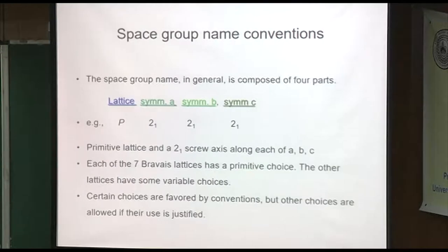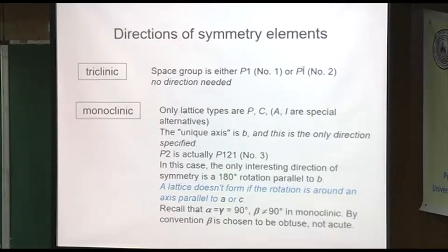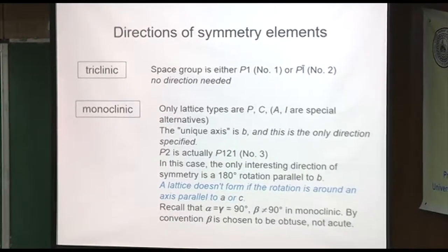Remember, we had seven Bravais lattices, and sometimes there's ambiguity and redundancy in the symbol, so there are symbols that are considered correct ones just by convention. Triclinic: the only thing you can have is either nothing or a center of inversion. A center of inversion inverts X, Y, Z to minus X, minus Y, minus Z — so don't worry about direction, it just goes through wherever that center is.